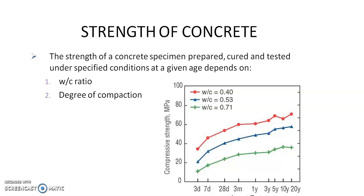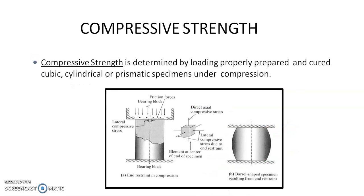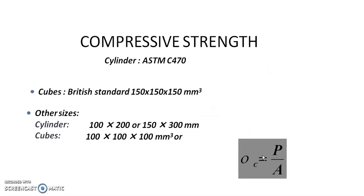The compressive strength is found as follows. The specimen is cast, prepared and cured. It may be in the shape of cubical, cylindrical or prismatic specimens. It is subjected to compression. Here, a cube is subjected to compressive stress from the top. Because of this compressive stress, the shape of the specimen becomes a barrel and cracks get formed. The size of the specimen normally used in the lab is 150 × 150 × 150 mm cube.